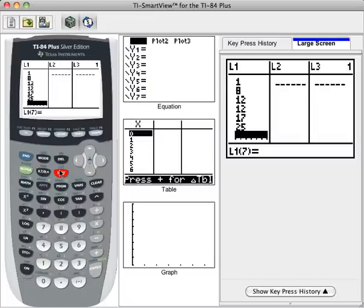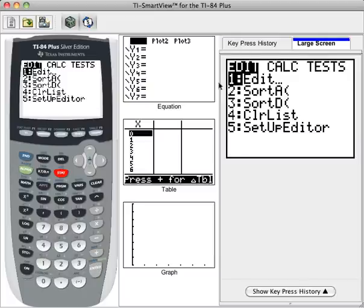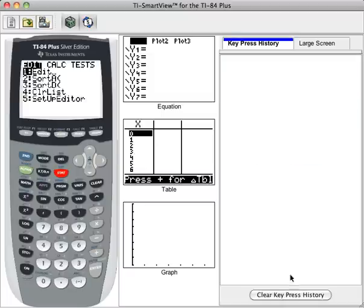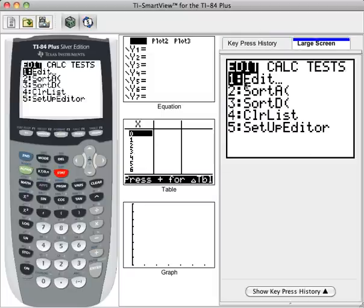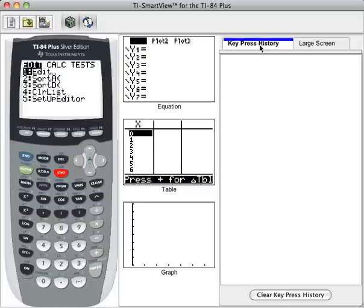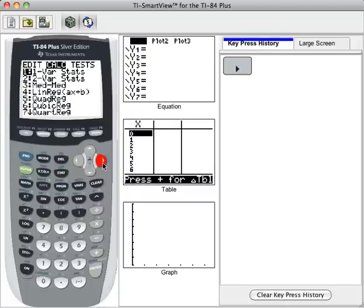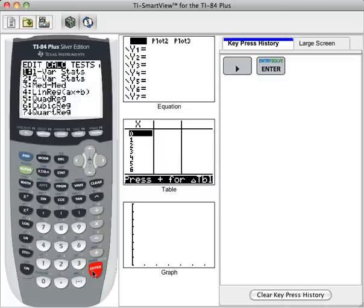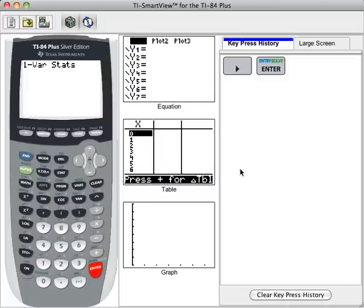So if I press stat again, and this time, well look at our key press history, so we just pressed stat, and so we're at this menu. If I want to calculate something rather than edit, I want to press the right arrow key to navigate over to the calculate submenu, and the thing that I want to select is one variable stats. It's my first option. I can select that either by pressing enter or by pressing the number one.